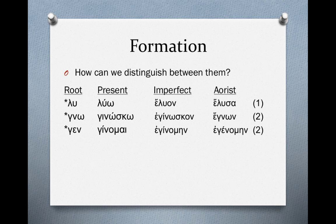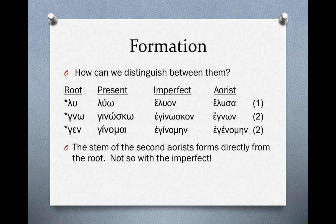For ginomai, the imperfect is eginomin, and you can see the gin there which forms directly from the present tense stem — it looks a little different from the root. But the aorist is egenomen — a very slight change, the difference being one vowel. Instead of eginomin, the aorist is egenomen, because the gen comes directly from the root. The imperfect will always form from the present tense stem, whereas the aorist will always form from the root. The stem of the second aorist forms directly from the root.